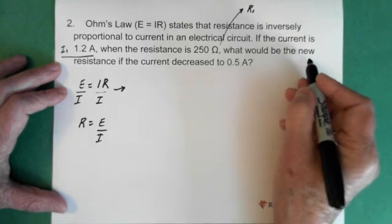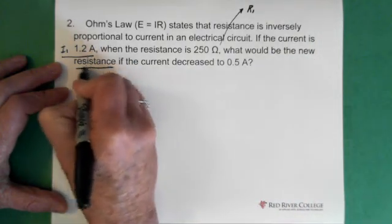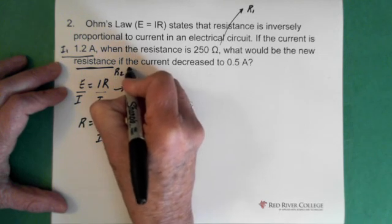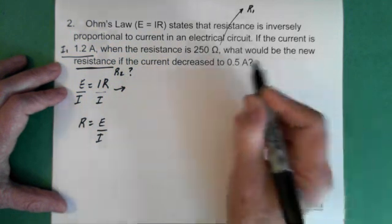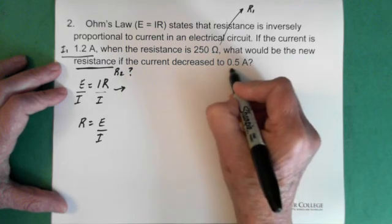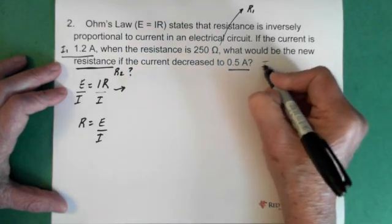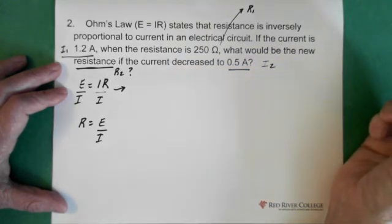What would be the new resistance? So we're looking for R2. That's a question mark. If the current decreased to 0.5 amps. So this is I2. All right.